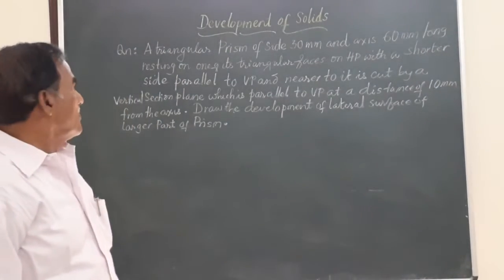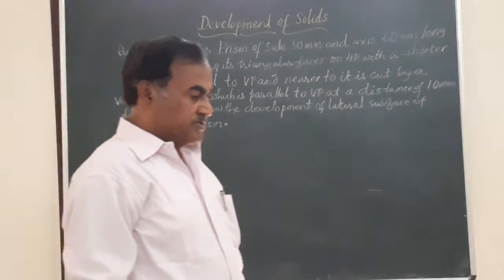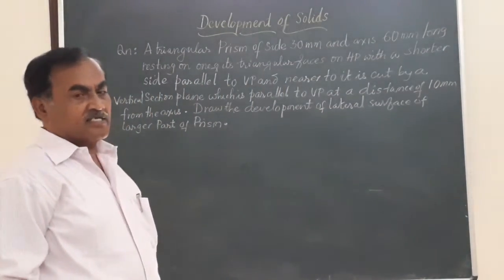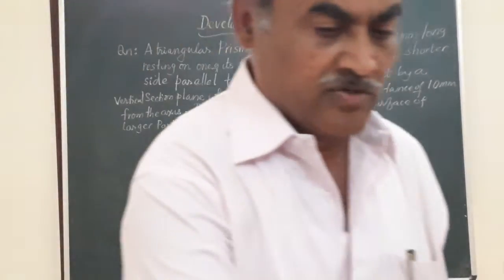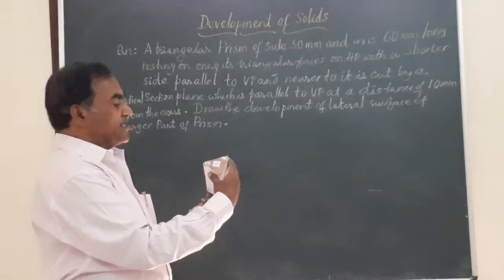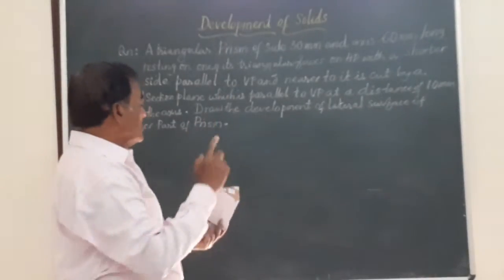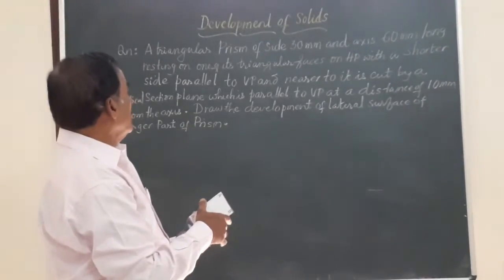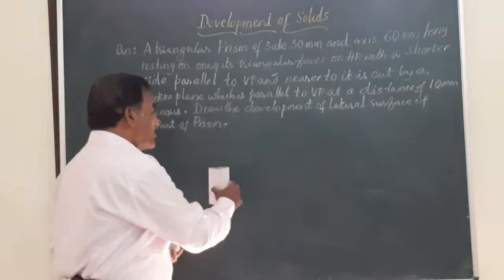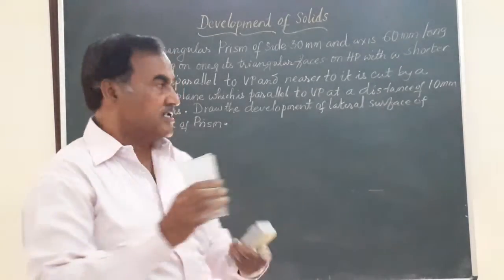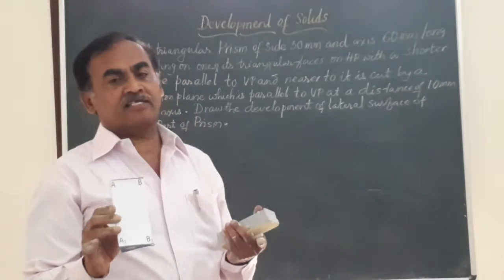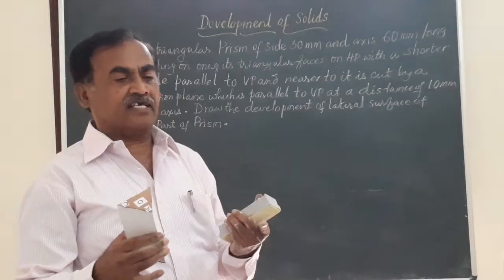In today's session, we are going to work on a problem involving a triangular prism which is being cut by a vertical section plane. I am required to draw the development of the lateral surface of that. The triangular prism is resting with one of its shorter edges parallel to VP, or nearer to it. They have not specified the distance, so it is our choice to use any convenient distance.